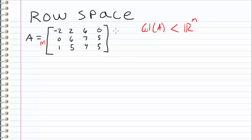Similarly, the row space of a matrix, which we denote as row of A, is a subspace of R n, where n is the number of columns in our matrix.